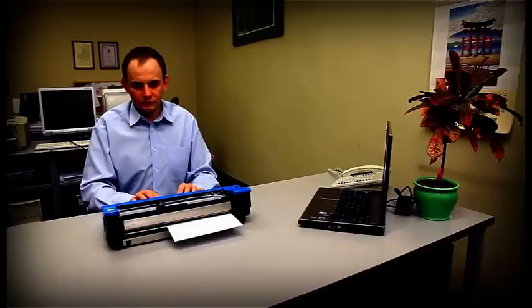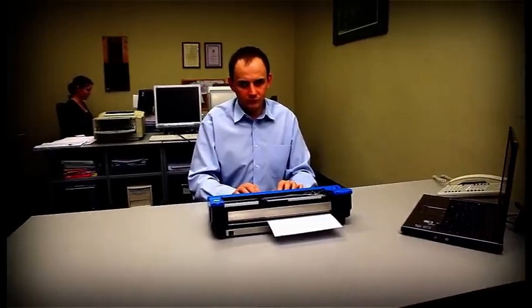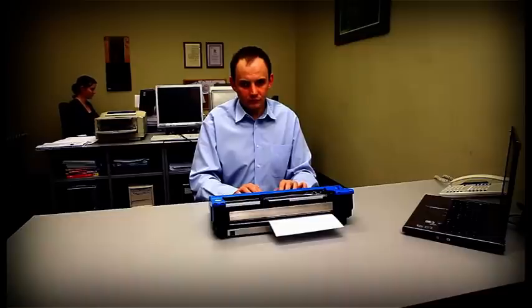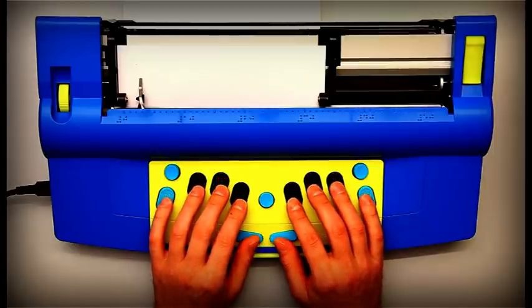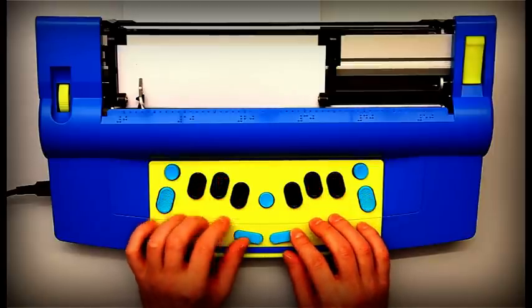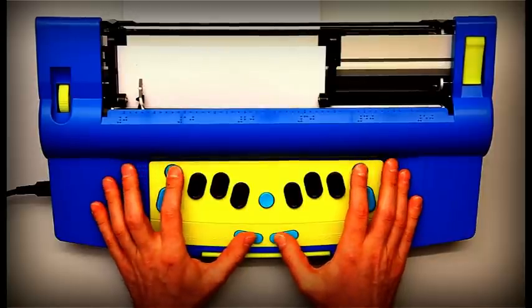When you first receive your Mountbatten, the command key is inactive. It's very easy to activate and deactivate it. You switch the command key from inactive to active and from active to inactive using tab, back tab, new line, and space.